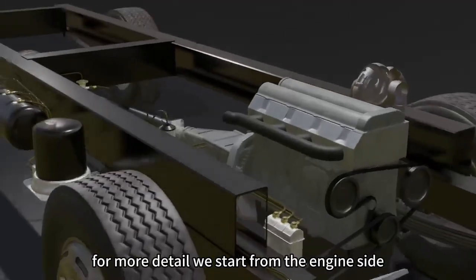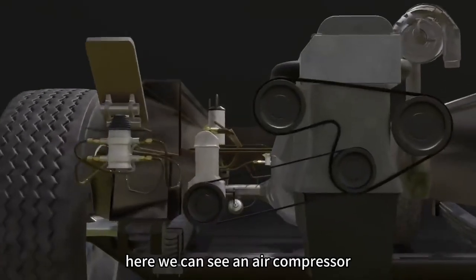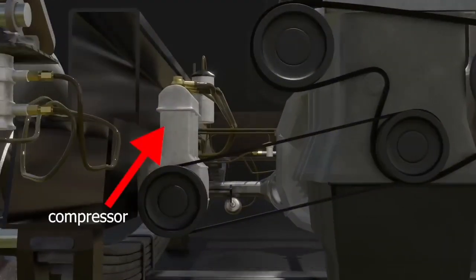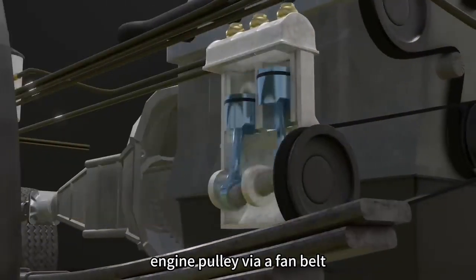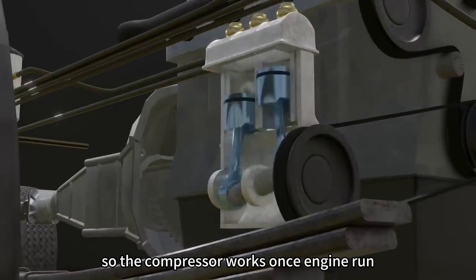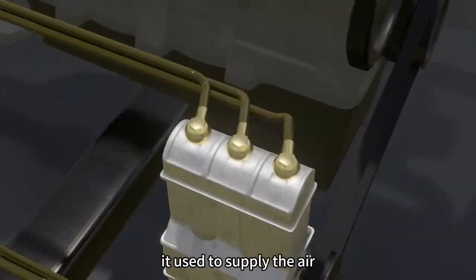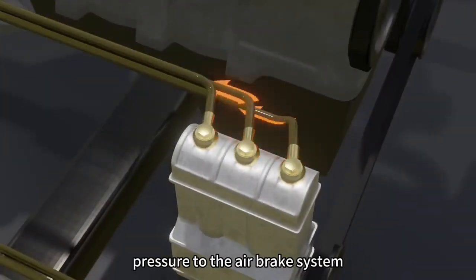For more detail, we start from the engine side. Here we can see an air compressor. Air compressor is connected to the engine pulley via a fan belt. The compressor works once engine runs. It's used to supply the air pressure to the airbrake system.